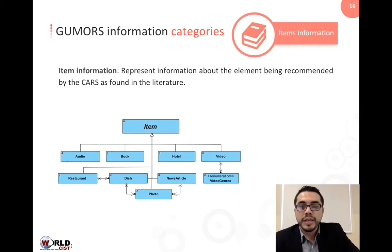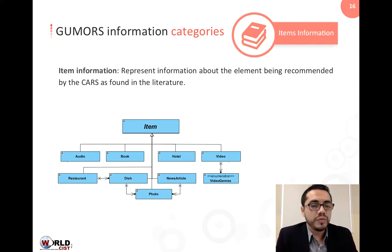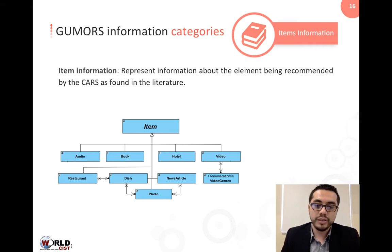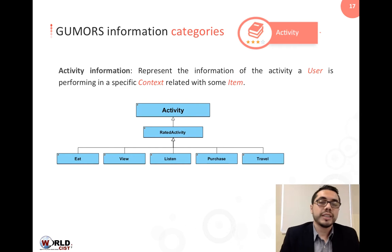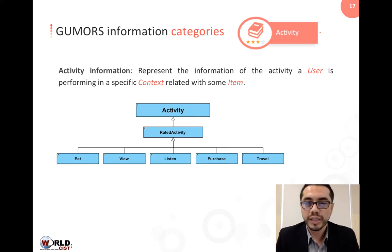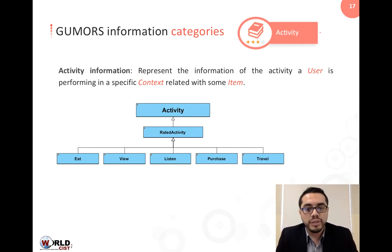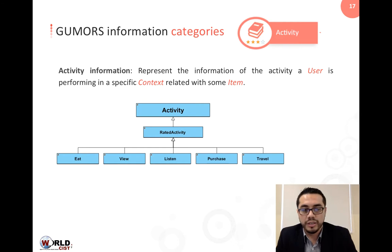The next category is Items. The model includes information about elements found in the literature review that are being recommended by context-aware recommender systems — for example, audio, video, and hotels. Finally, the last category is Activity. An activity represents what the user is doing, in what context, using specific items, and can store the rating value that the user gives to the item. For example, a user, John, is running in the park (the context), while listening (the activity) to a specific song (the item).